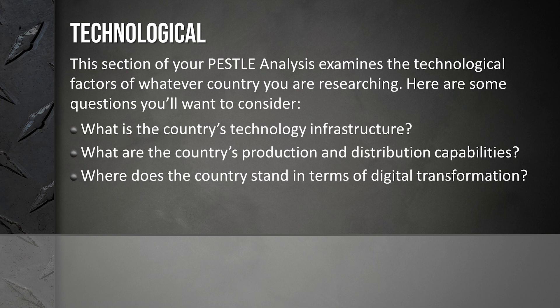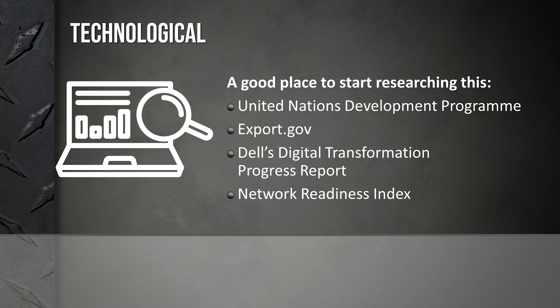Next, we have technological. We want to look at the technological factors in the country — things like: What is the country's technological infrastructure? What are its production and distribution capabilities? And where does the country stand in terms of digital transformation? Dell's Digital Transformation Progress Report is pretty fascinating, as well as the Network Readiness Index. Go ahead and Google these and you can start your search there.